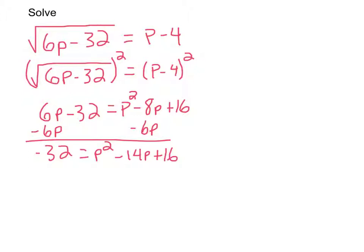Now I want to get my 32 onto the other side as well. So I've got plus 32 plus 32. That's going to leave me 0 is equal to p squared minus 14p plus 48.